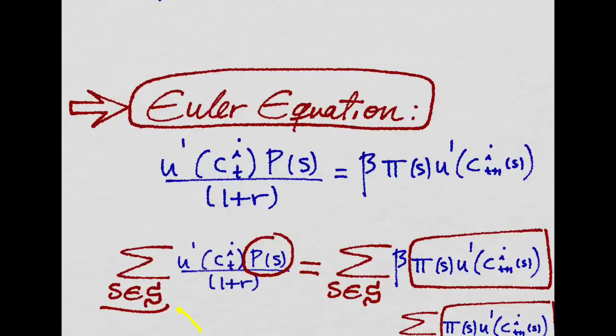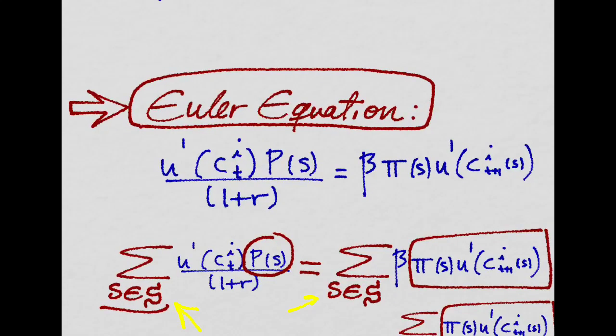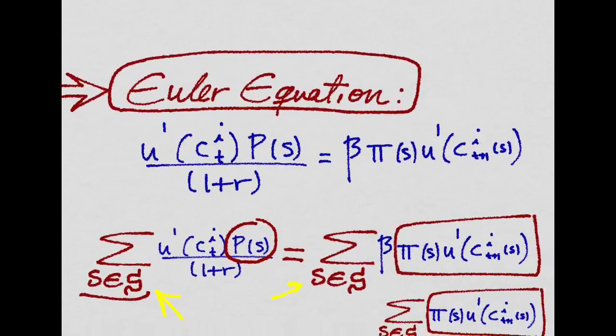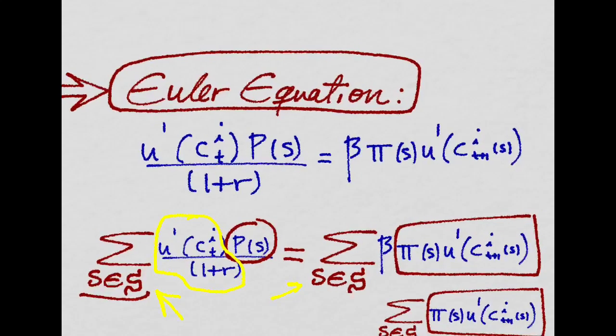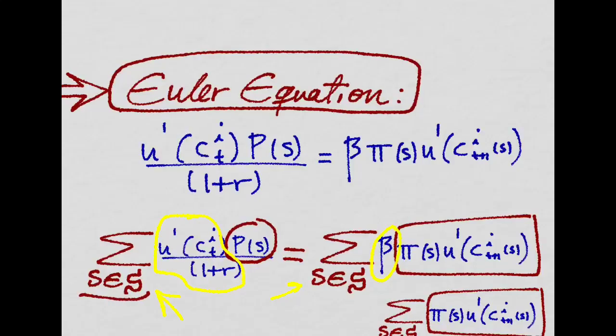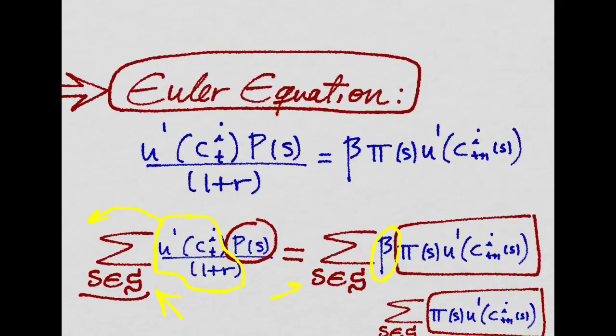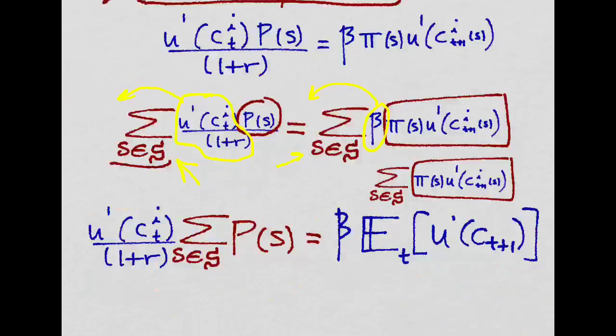We sum both sides, and we realize that actually this term right here and this term right here, beta, do not depend on S. So we can actually take them out of the sum, and that is what we do here.